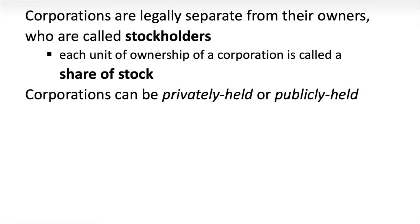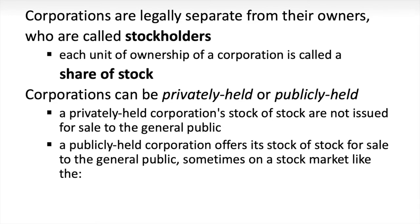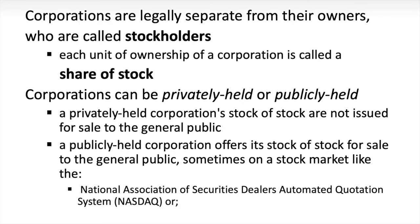Corporations can be privately held or publicly held. A privately held corporation's stock is not issued for sale to the general public and is subject to far fewer regulations. Companies like Uber, Pinterest, and Instagram had long lives as private companies even while operating at scale. A public company is one that sells its stock on a stock market like the New York Stock Exchange or NASDAQ. There are different accounting rules for the two, and that's why the distinction matters in our accounting class.